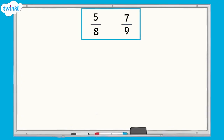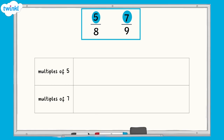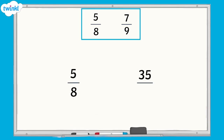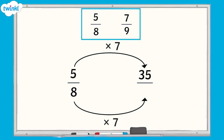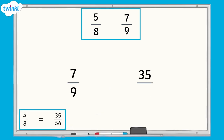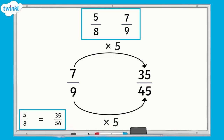Let's take a look at a question where one numerator is not a multiple of the other numerator. Here we have 5 eighths and 7 ninths. 7 is not a multiple of 5, so we need to find a common multiple of both 5 and 7. We can do this by listing out the multiples of both 5 and 7. By doing this, we can see that 35 is a common multiple of both 5 and 7. I need to find the equivalent fractions of 5 eighths and 7 ninths that have 35 as a numerator. 5 multiplied by 7 equals 35, so I must apply the same rule to the denominator. 8 multiplied by 7 equals 56, so 5 eighths is equivalent to 35 56ths. To convert 7 ninths, I will multiply 7 by 5 and 9 by 5 to give the fraction 35 45ths.